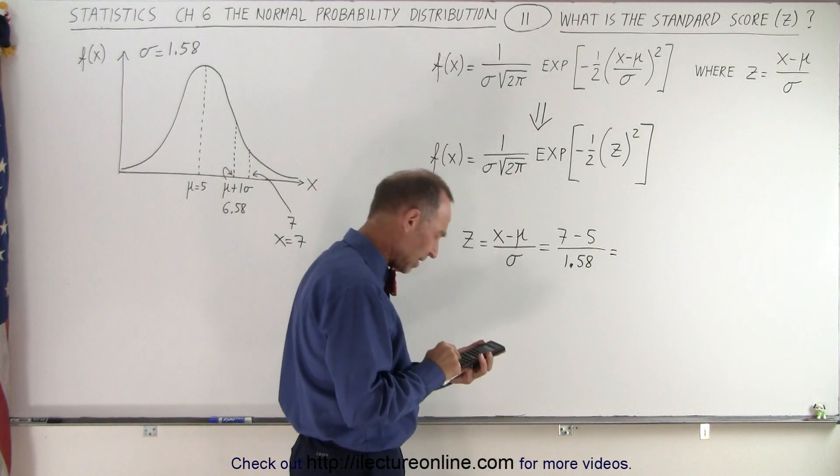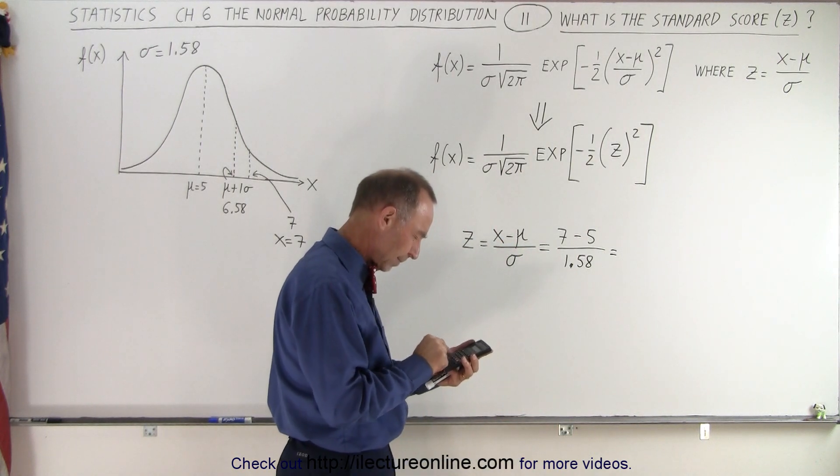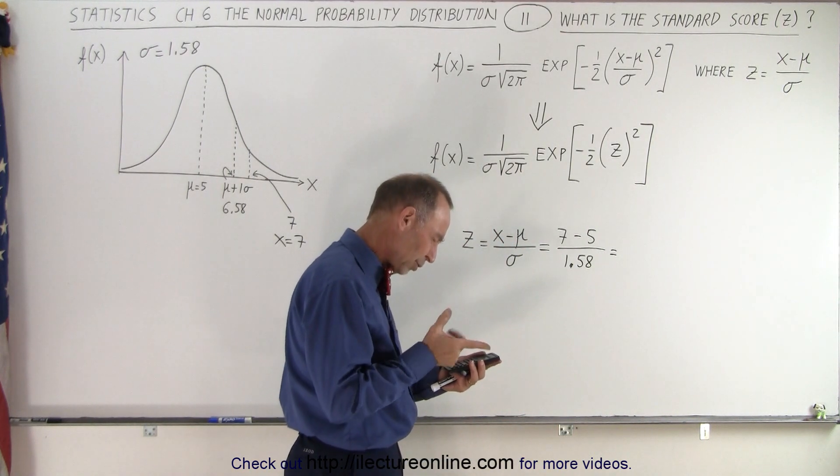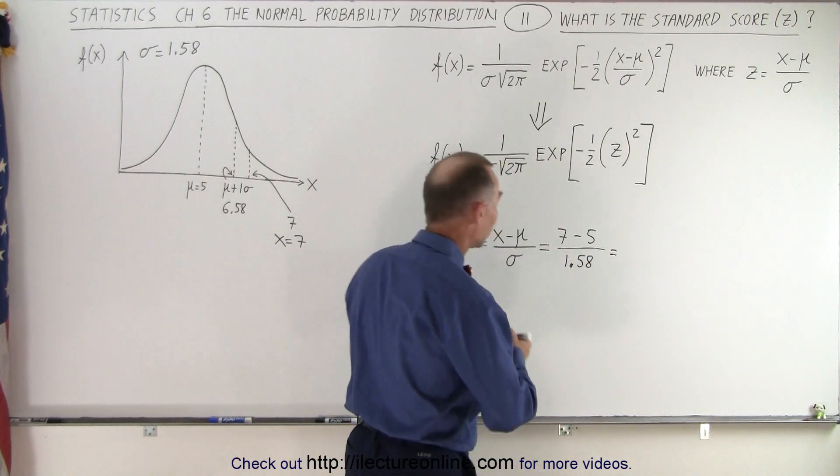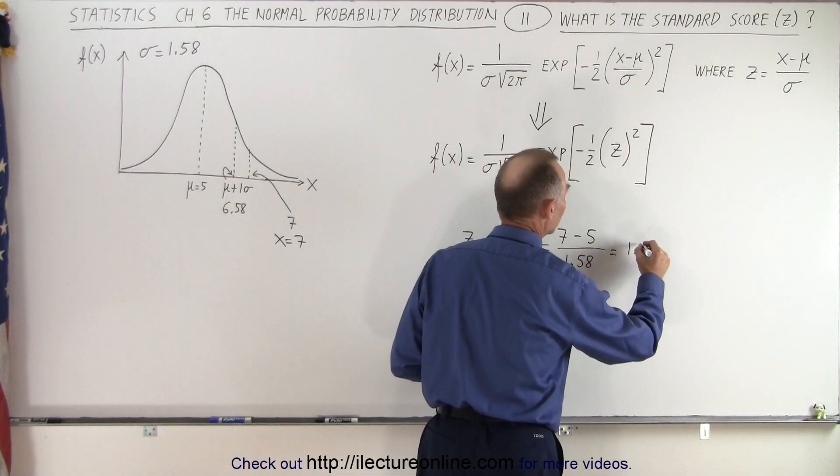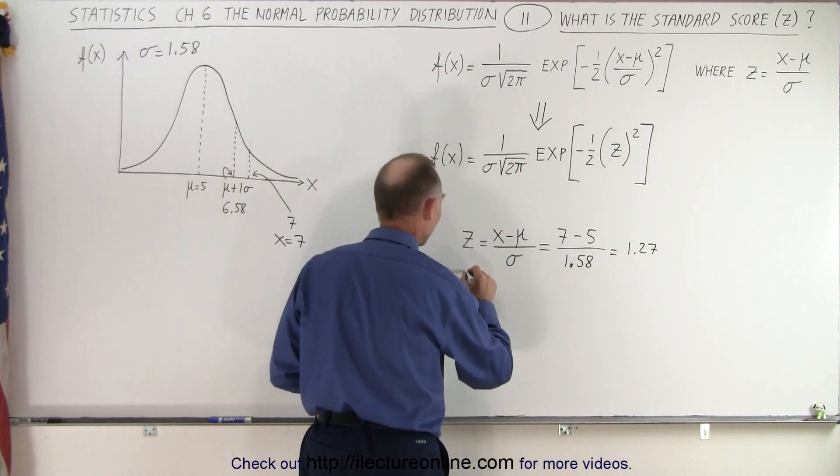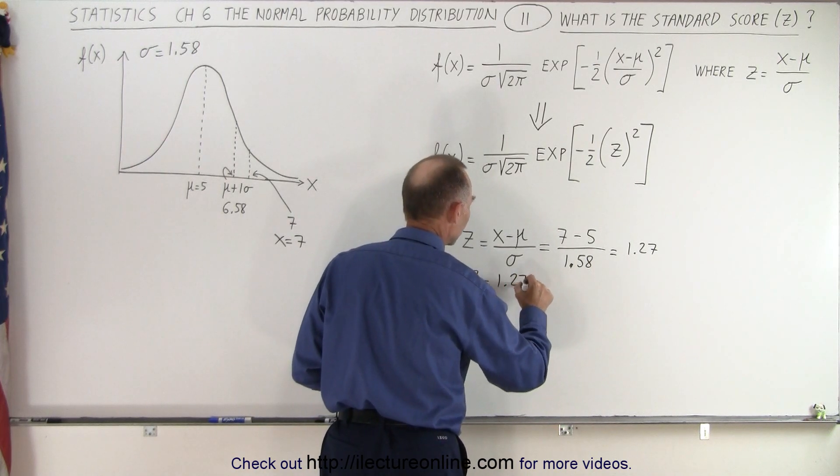Let's see what that's equal to. That's 2 divided by 1.58, which is 1.27, essentially, to two decimal places, which is 1.27. So in this case, Z equals 1.27.